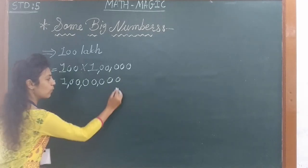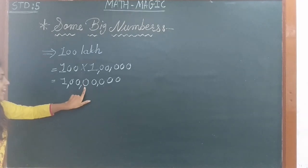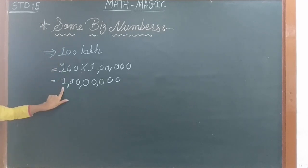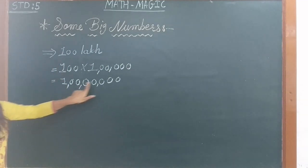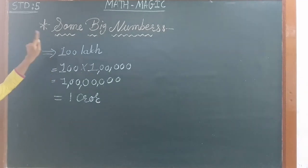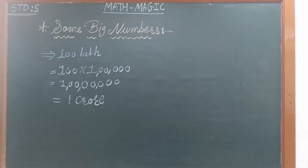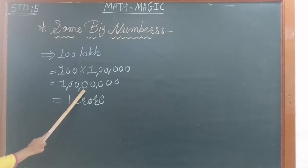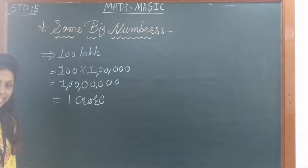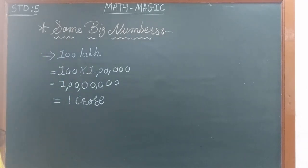Now let's read the place values: ones, tens, hundreds, thousands, ten thousands, lakhs, ten lakhs, and one crore. So we can read hundred lakhs as one crore. Hundred lakhs is equal to one crore. And one crore has how many zeros? One, two, three, four, five, six, seven — seven zeros. So hundred lakhs is equal to one crore, and one crore has seven zeros.